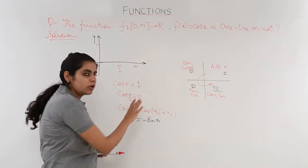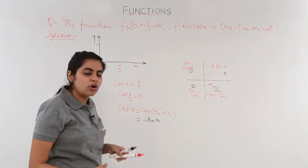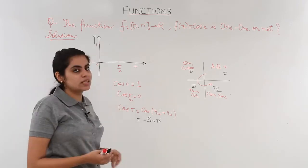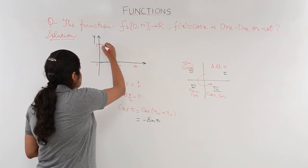We have some intermediate values also: cos 30 degrees, cos 45 degrees. By putting all those values along with this value, my graph would get a shape something like this.